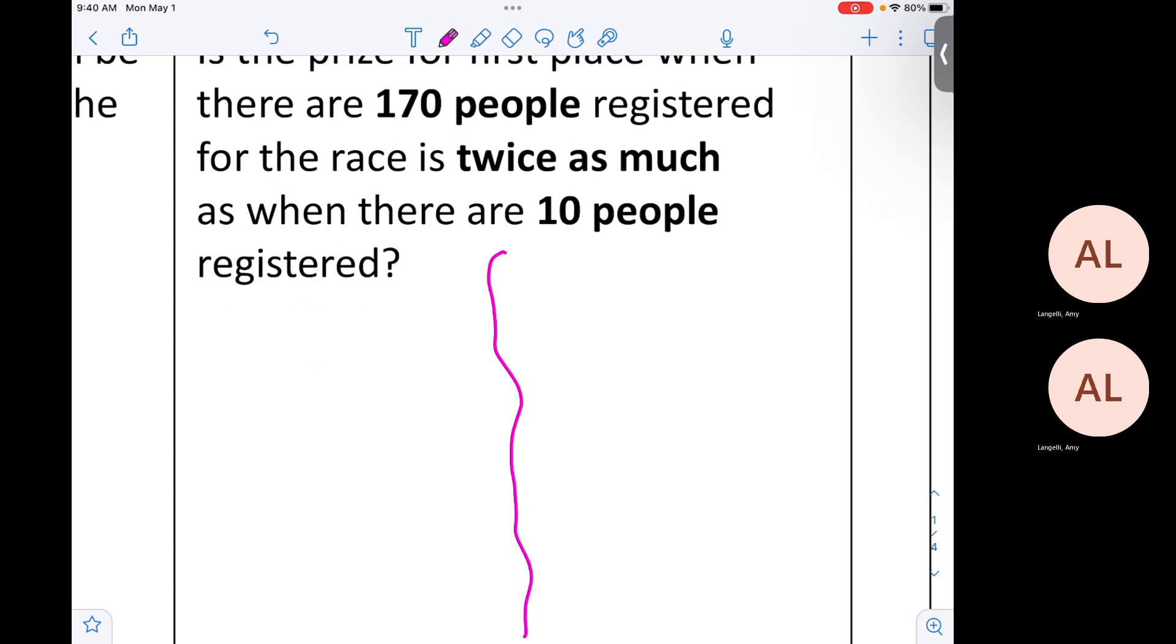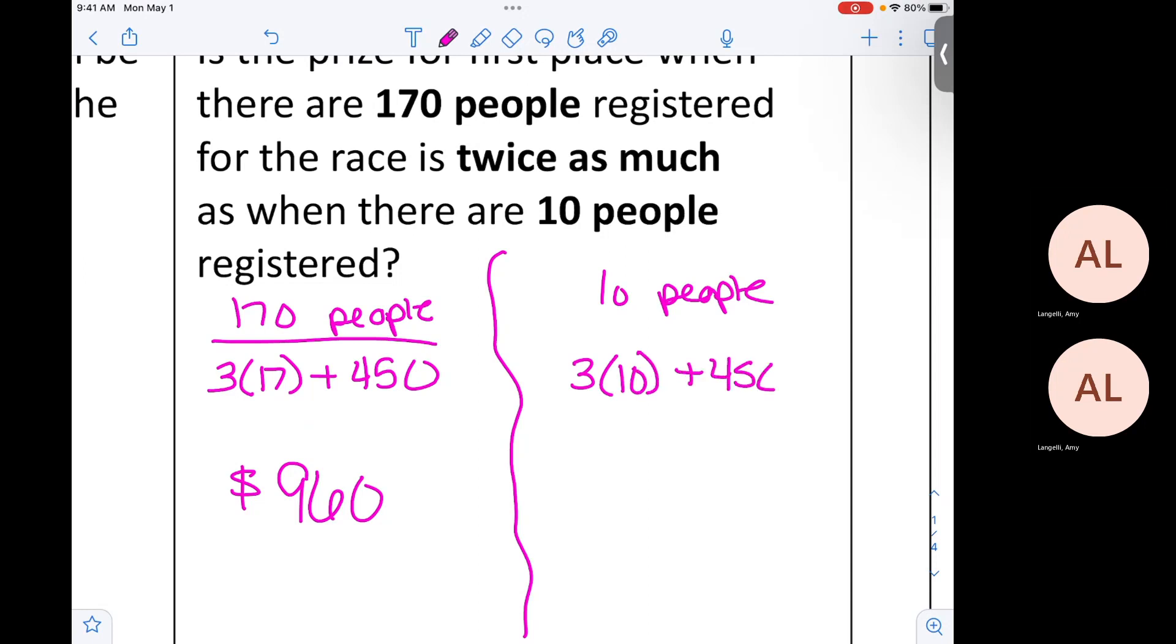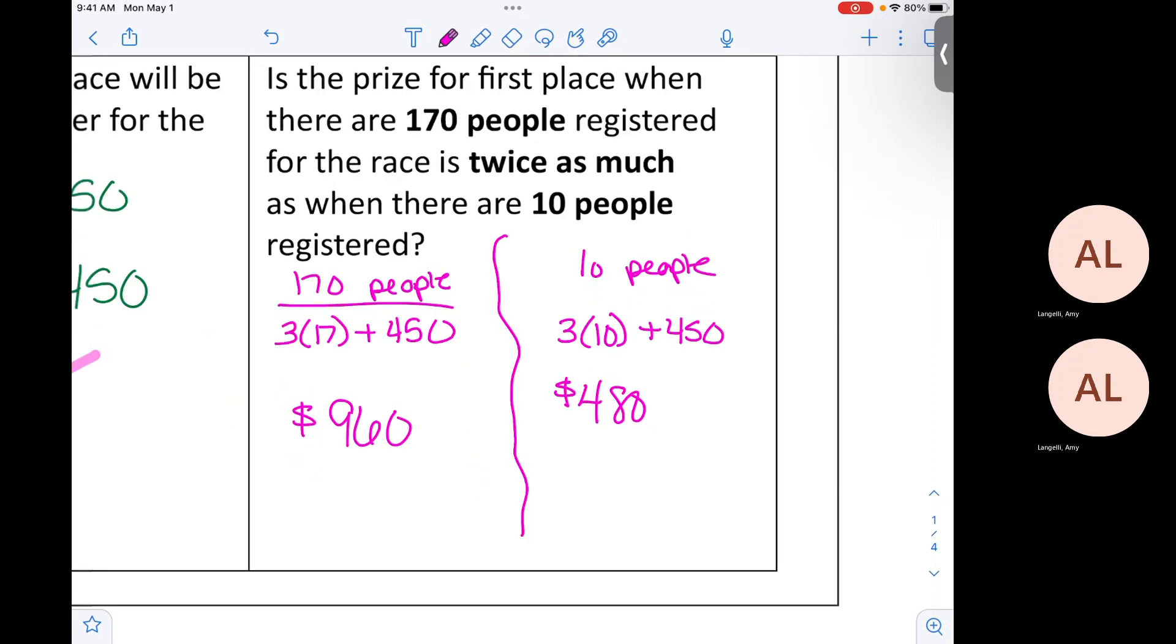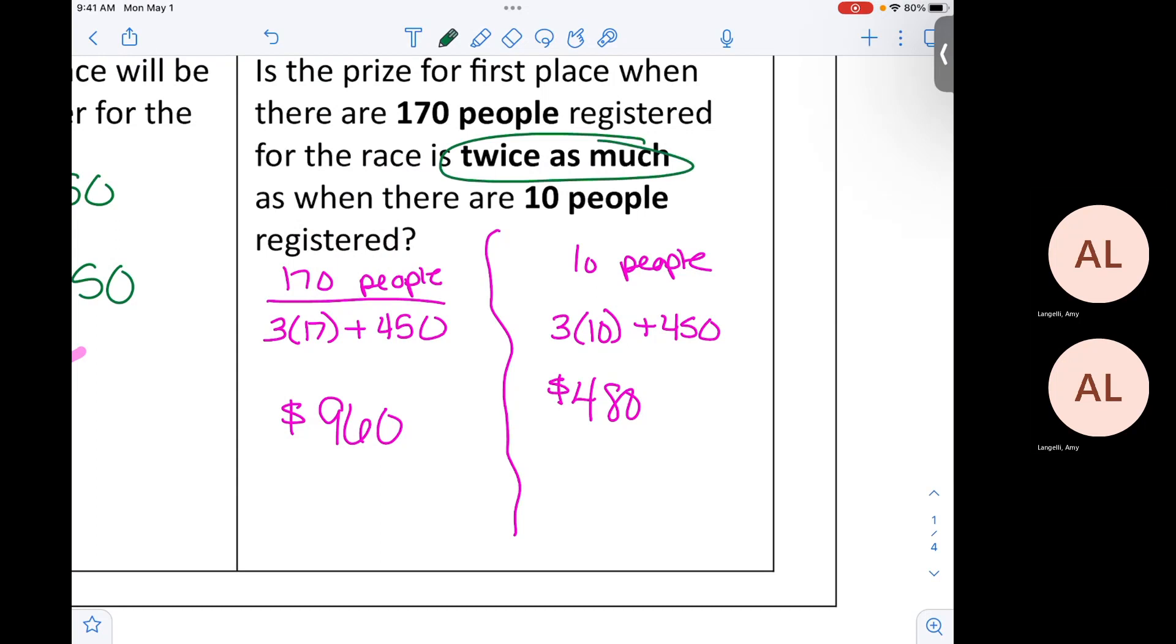Tell me what you typed in your calculator for 170 people. 3 multiplied by 170. And you got 960 over here? What about 10 people? Who can mimic what he just did for 10 people? 10 plus 450, 480, you said? So do you guys think this is true or not? Is this a yes, this is true, or no, this is false? Because I wanted to know, is it twice as much? It is. This is a yes. 960 is twice 480. In other words, it's double. So this is a true statement.